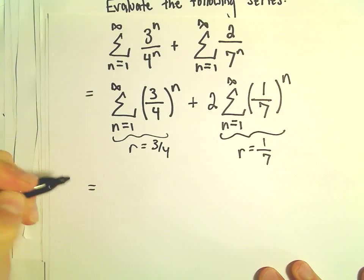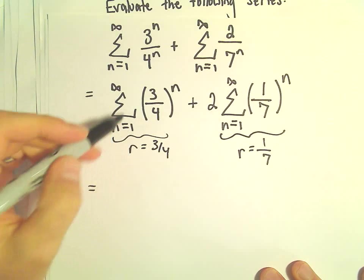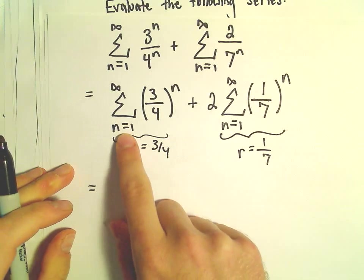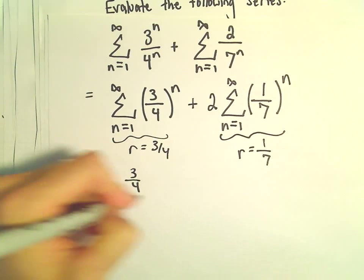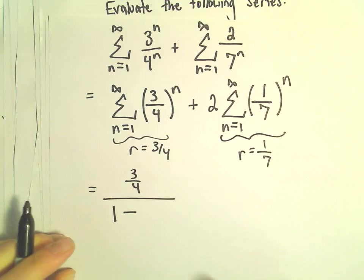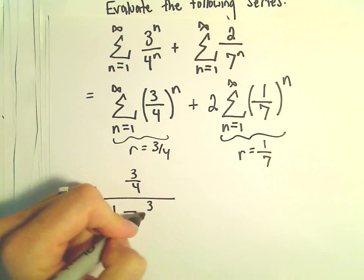So these will both converge. This one says it will converge to the first term. So if we plug in n equals 1, we'll get 3 over 4. And then we do 1 minus our r value, which again is 3 over 4.